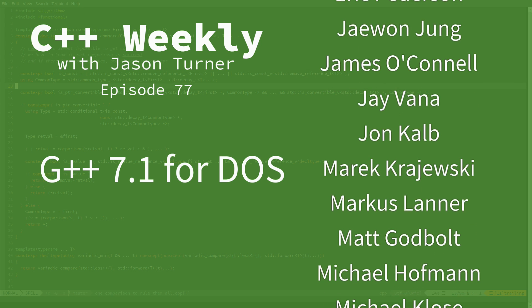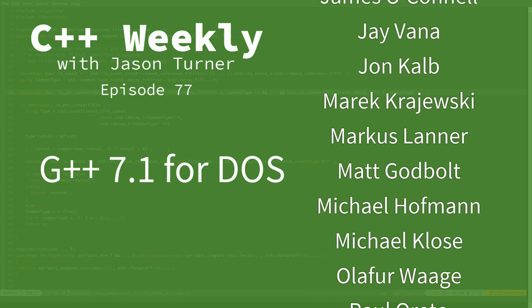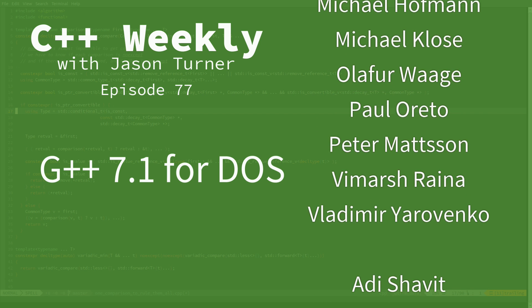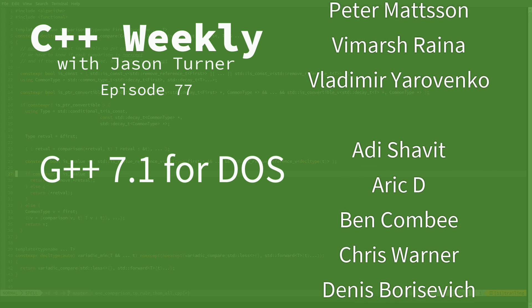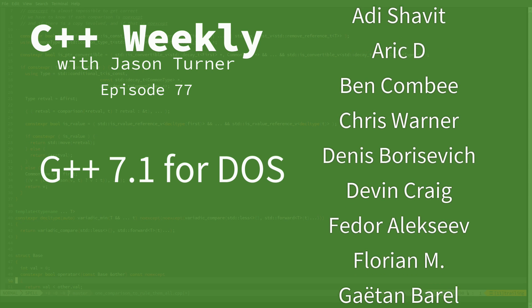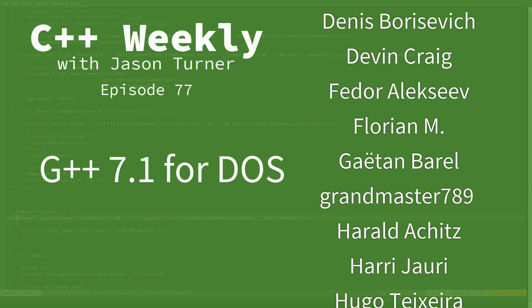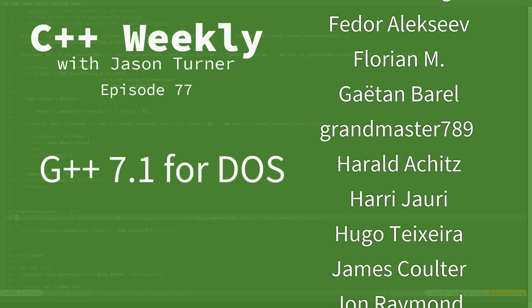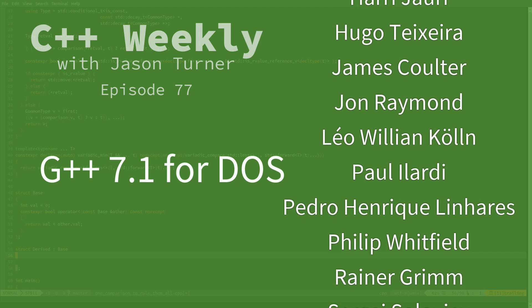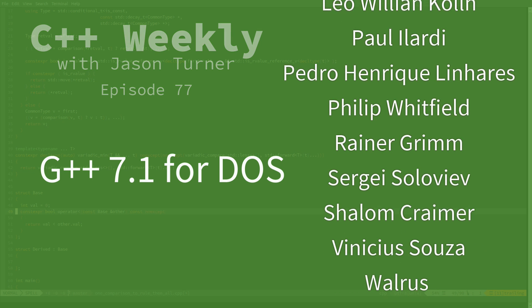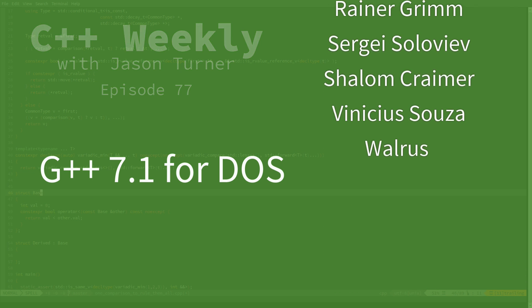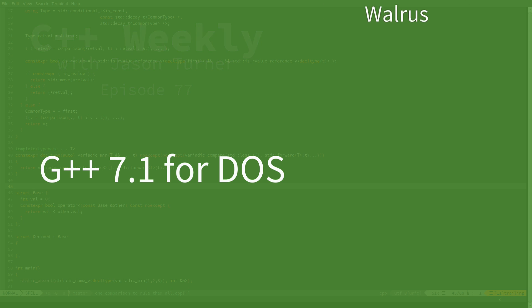I first started programming in C++ in about 1996, and at the time I used DJGPP, which is a C++ compiler for DOS. I was recently reminded of DJGPP and I thought that I would go back to it and see what the status was.